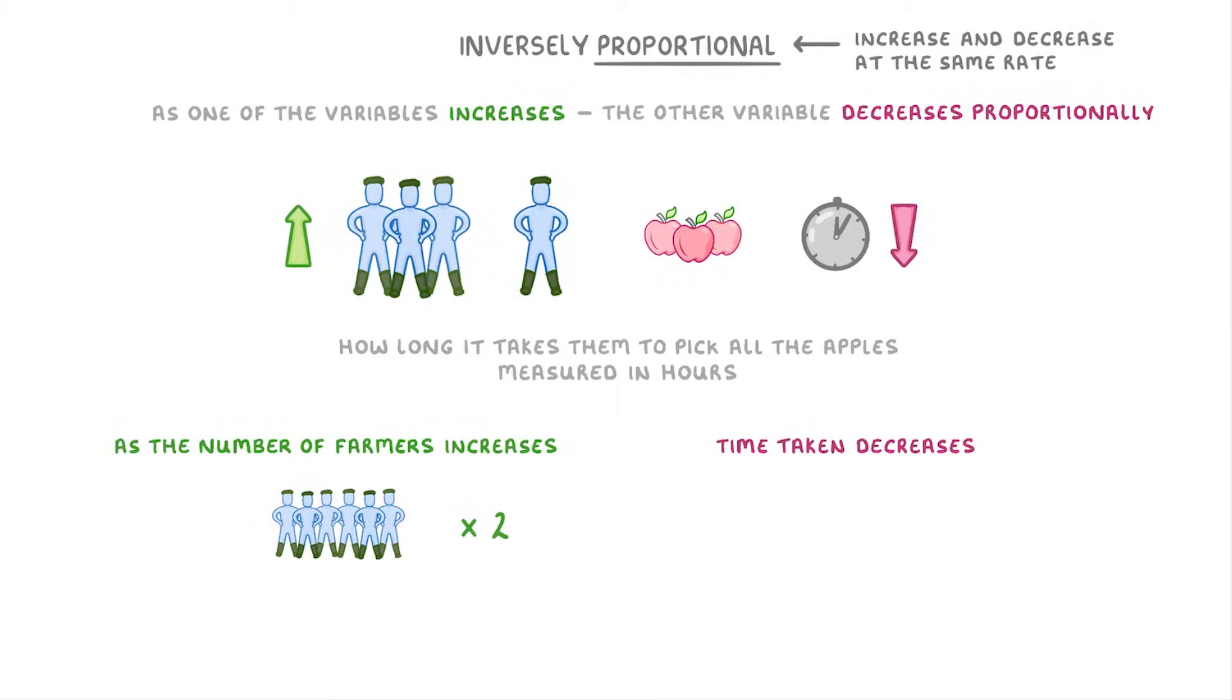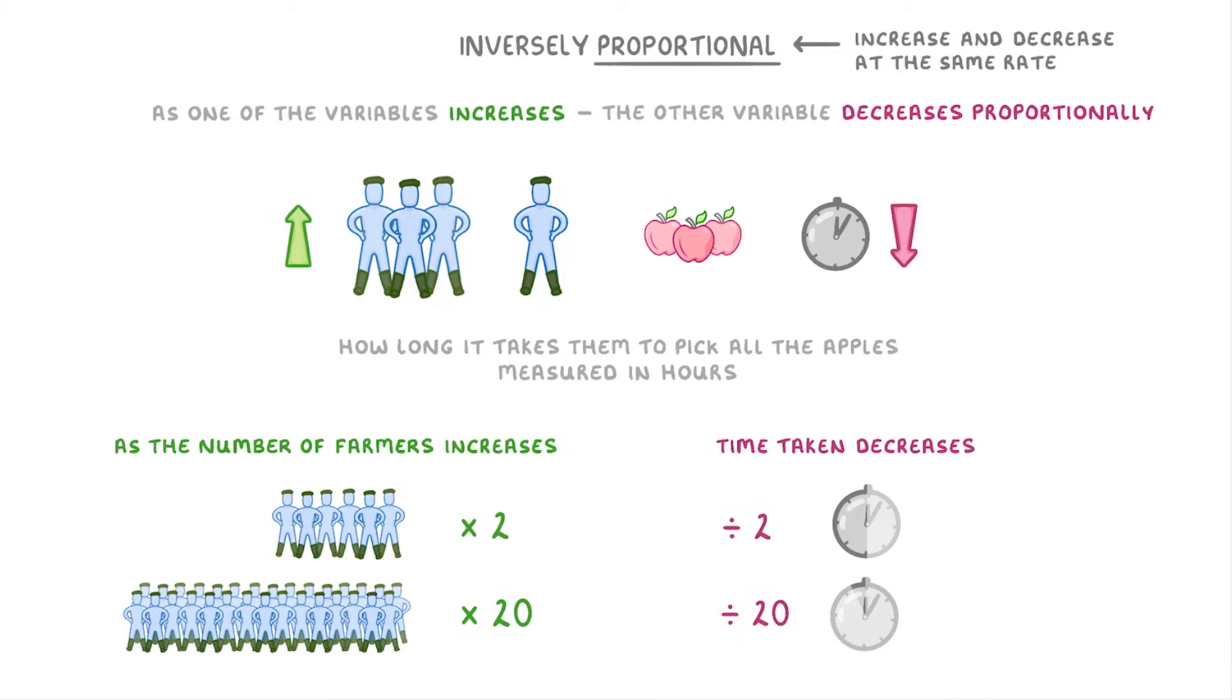For example, if the number of farmers doubles, then the time taken will half. Or if we had 20 times as many farmers, then it would take 20 times less time to pick the apples.